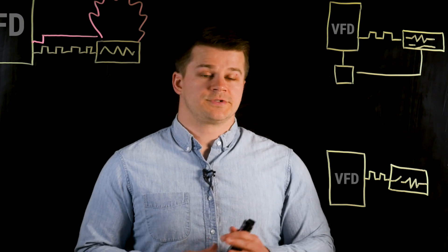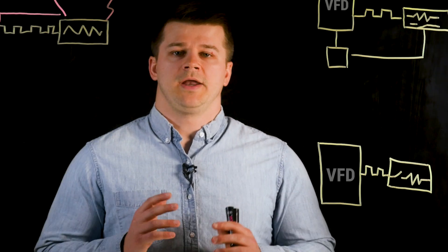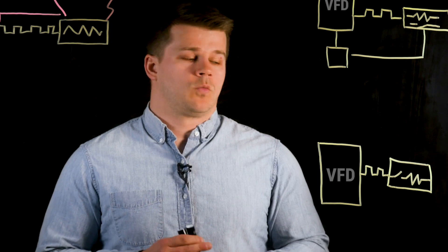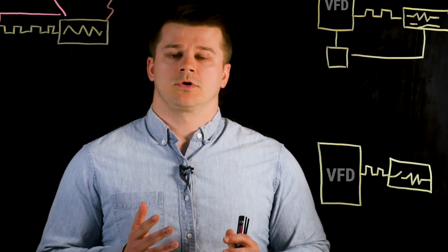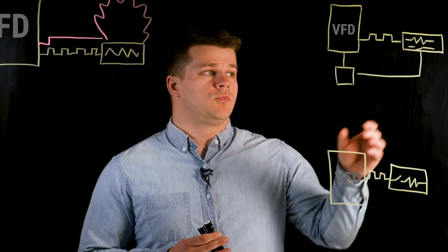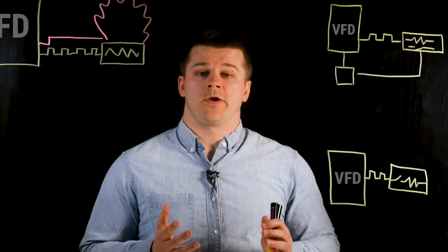This third diagram shows an intrinsically safe resistor. An intrinsically safe resistor works like a fuse where if it gets too hot, it fails open so no power can flow across the resistor. The upside of this is that it removes the thermal switch so there's less wiring involved.